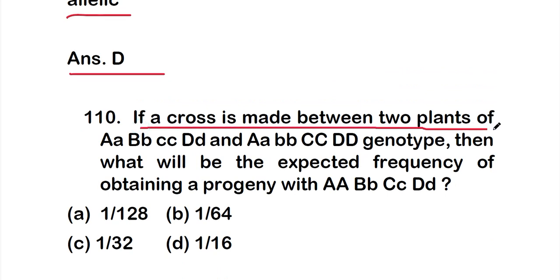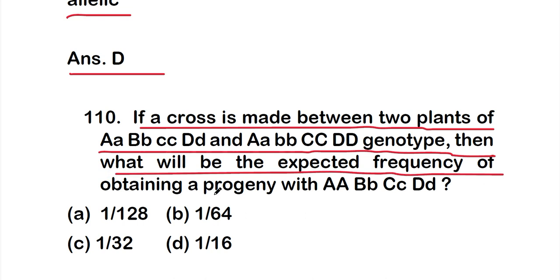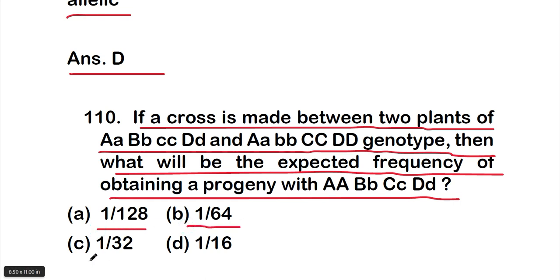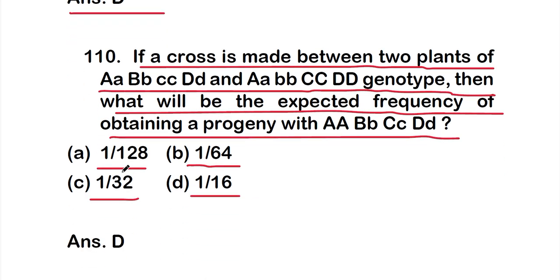Question 110: a cross is made between two plants of genotype AaBbCcDd and AAbbCCDD. The options for the expected frequency of obtaining a specific progeny are: Option A 1/128, Option B 1/64, Option C 1/32, Option D 1/16. The right answer is Option D — 1/16 is the expected frequency of obtaining that progeny from this cross.